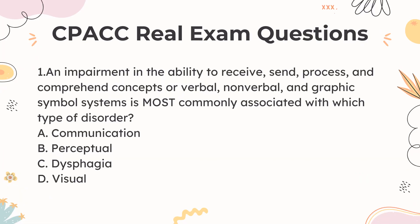1. An impairment in the ability to receive, send, process, and comprehend concepts or verbal, non-verbal, and graphic symbol systems is most commonly associated with which type of disorder? a. Communication b. Perceptual c. Dysphagia d. Visual